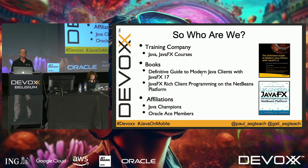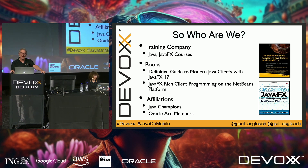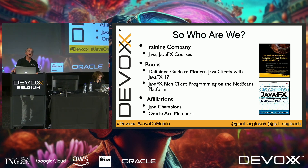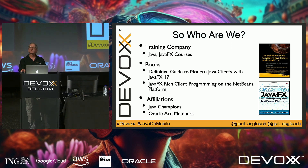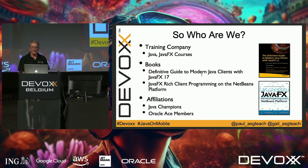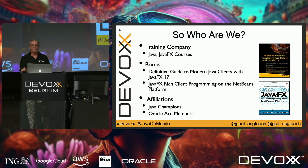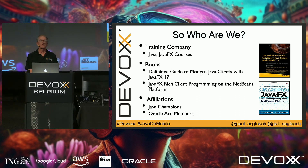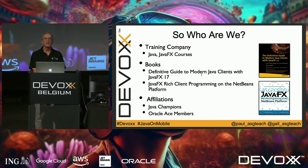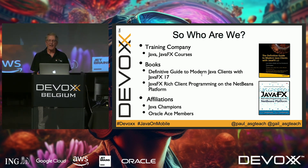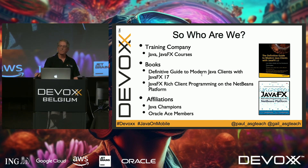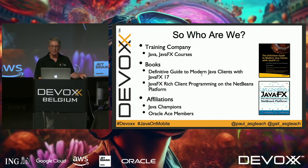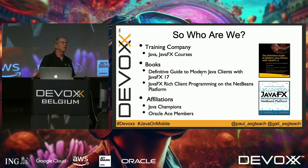Gail and I are the co-founders of the Anderson Software Group, a training company based in the U.S. We teach many courses including Java, JavaFX, Python, Golang, Modern C++, and Docker and Kubernetes. We're also authors of nine textbooks on software programming — including The Definitive Guide to Modern Java Clients with JavaFX 17, and the JavaFX Rich Client Programming on the NetBeans platform. Gail and I are also Java Champions and Oracle ACE members.